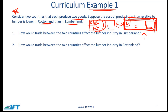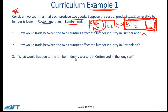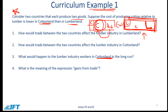What about the lumber industry in cotton land? That industry will actually shrink because lumber is now coming from lumber land. In the long run, workers from the lumber industry in cotton land would have to be retrained to work in the cotton industry, which is doing well because cotton land will start exporting cotton to lumber land.